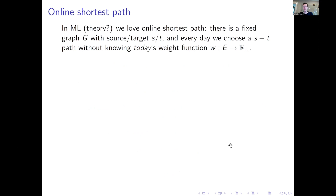Let's start with online shortest path — our guiding light for the presentation. In machine learning theory, and also in real machine learning, this is a problem we love a lot. Online shortest path works like this: there is a fixed graph with a source and a target. Every day, you want to choose a path from the source to the target — like biking from home to work, choosing your route. But you don't know the delays on the edges for that day; the weight function from the set of edges to R+ is unknown. We play a repeated game where every day we choose another path, and we want our total delay to be good compared to the best we could have done in hindsight if we had chosen a fixed route.